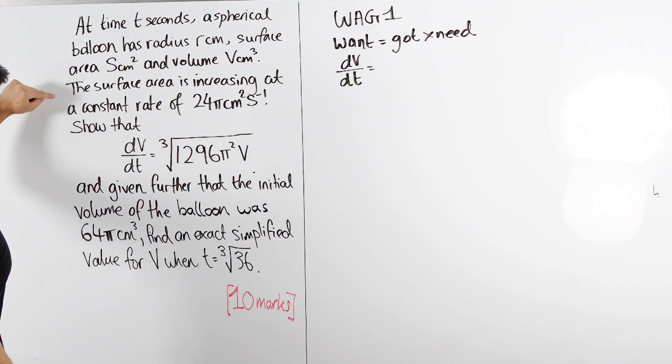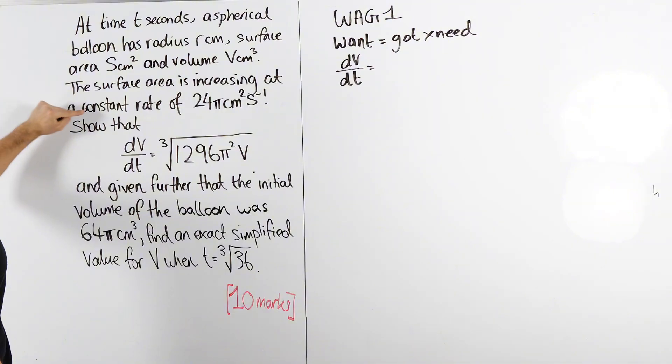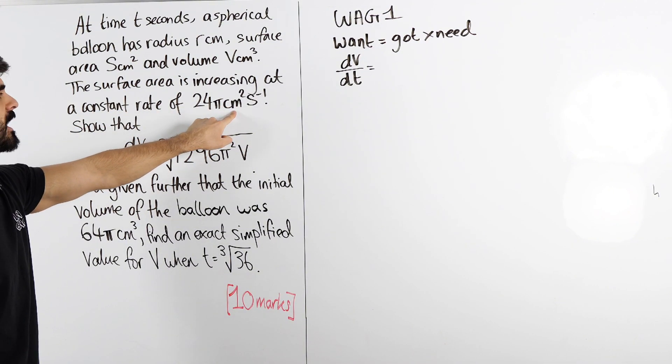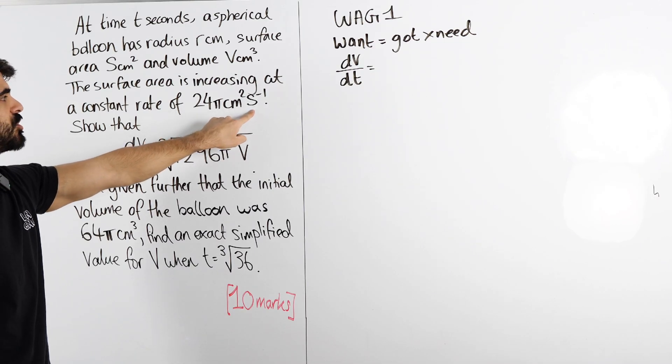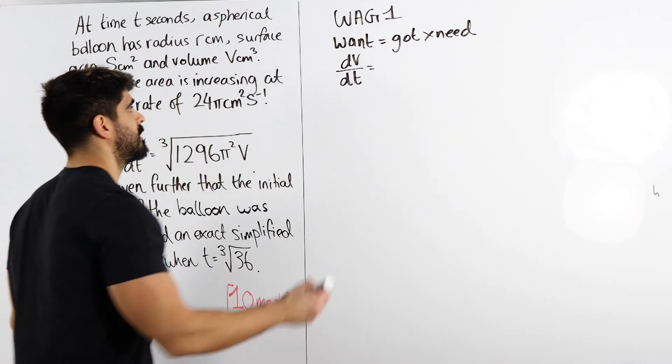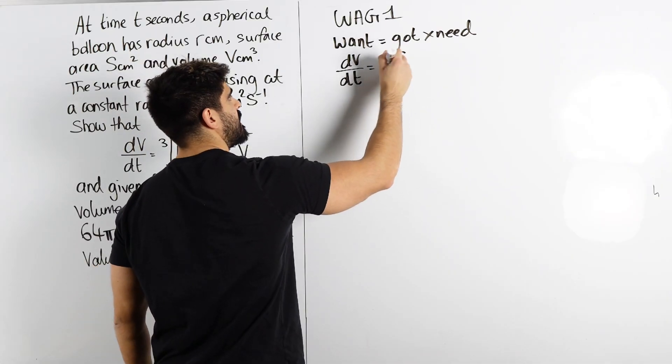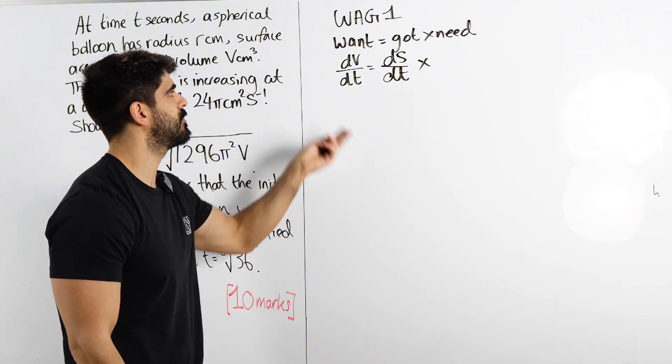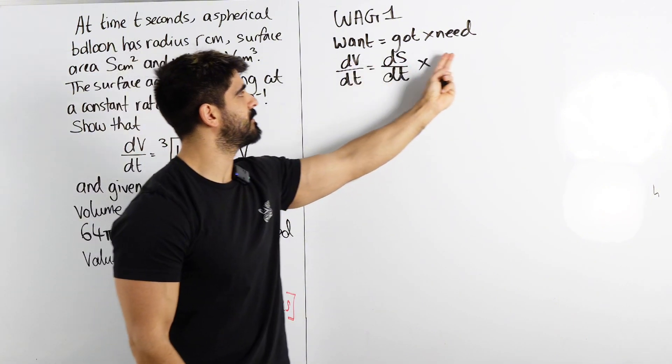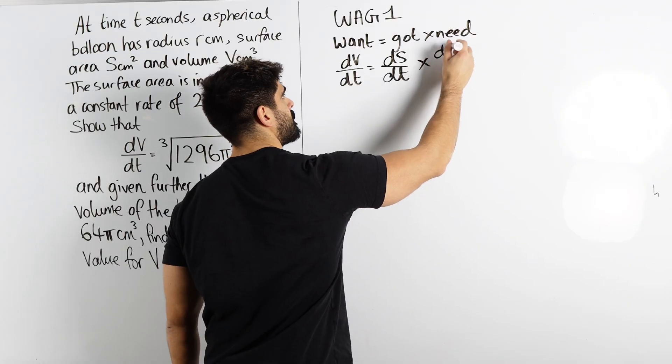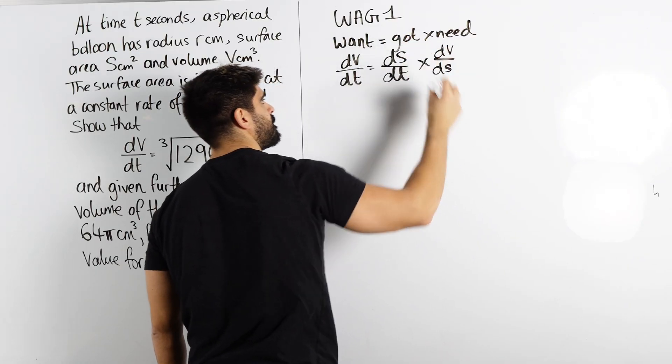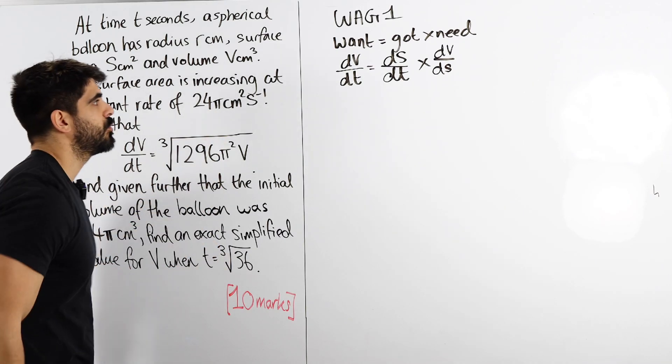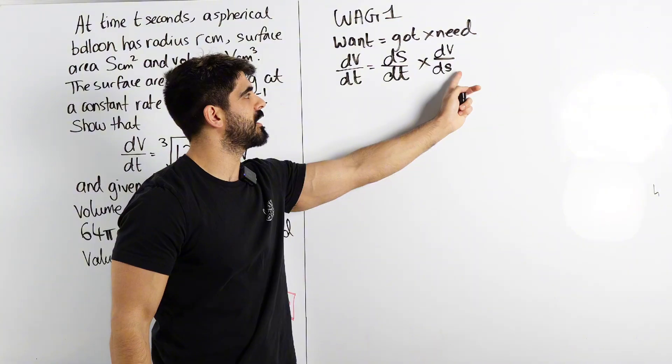So, we want dv by dt. What have we got? They said the surface area is increasing at a constant rate of 24π centimeters squared per second. That is a change in area over a change in time, ds by dt. So we have got ds by dt. What do we need to multiply that by then to balance the whole thing out and be left with dv dt? Well, we need a dv on the top and we need to cancel out the ds.